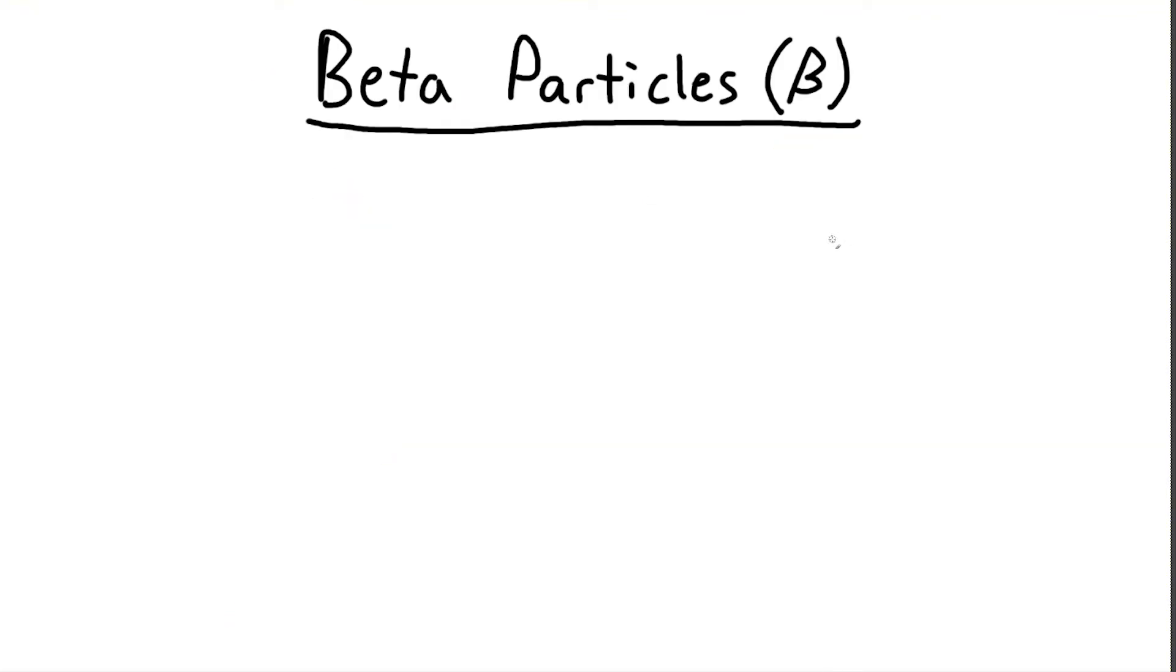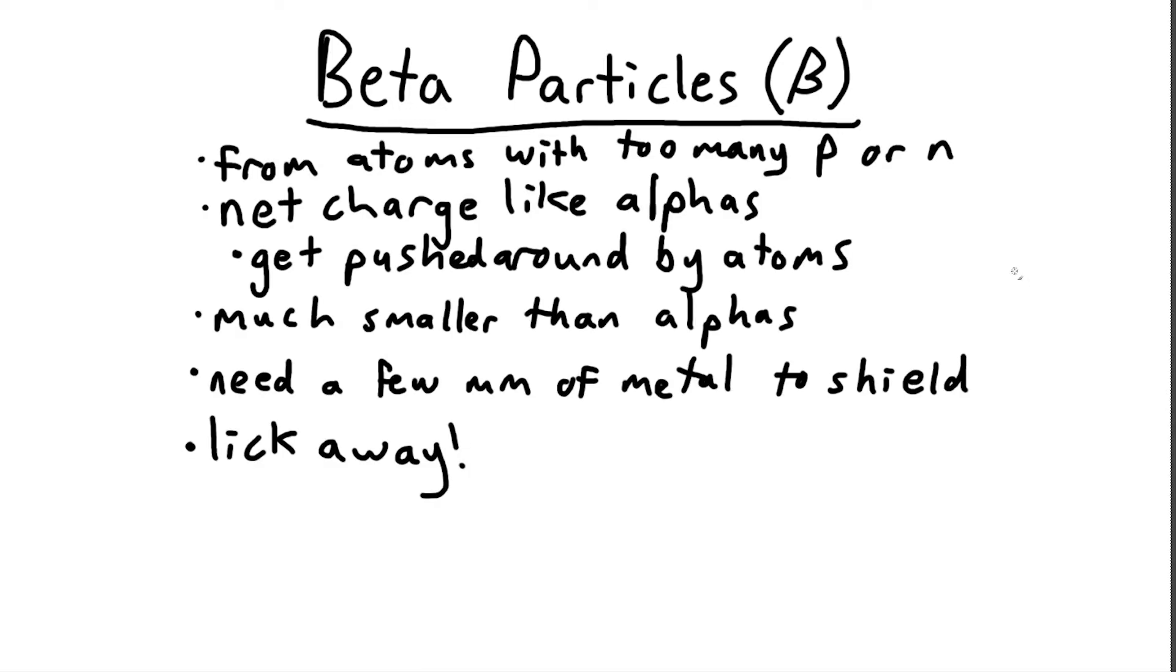Next up, we have beta particles. These are electrons that are emitted by the nucleus of an atom that has too many neutrons or protons. Like alpha particles, beta particles also have a net charge and get the same pushing and pulling effect from atomic nuclei that alphas do. However, because betas are much smaller than alphas and have a lower charge, you'll need something thicker to shield them, like a few millimeters of metal.